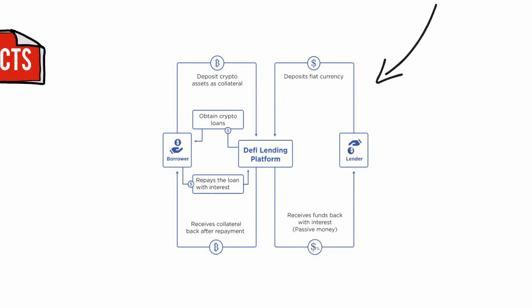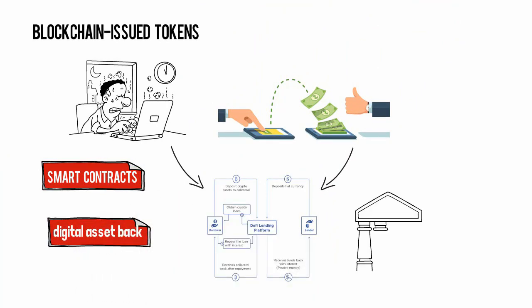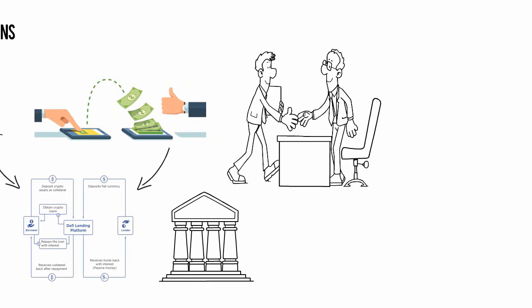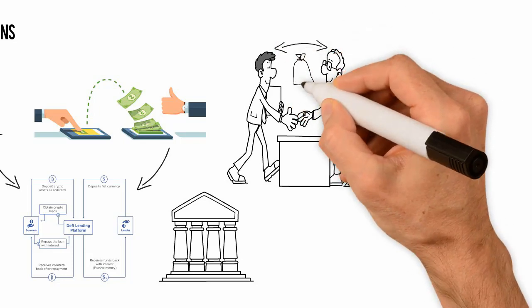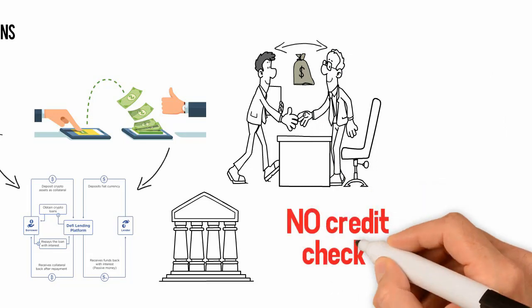The idea behind open lending protocols is simple: users deposit their digital assets onto the platform. When someone else borrows those digital assets, they earn interest. When the loan is over, they get the digital asset back. It's kind of like a bank, except instead of intermediaries, smart contracts dictate the loan terms — they connect lenders and borrowers and are in charge of distributing the interest.